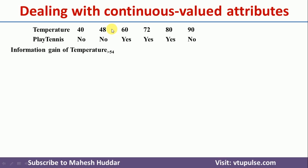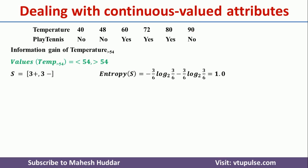If we consider 54 as the boundary, there are two possibilities: less than 54 gives 2 instances and greater than 54 gives 4 instances. The whole dataset contains 3 no examples and 3 yes examples — that is 3 positive and 3 negative — so the entropy of the whole dataset is 1.0.